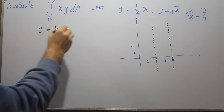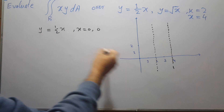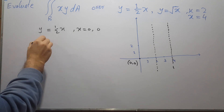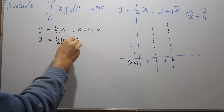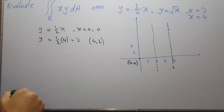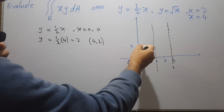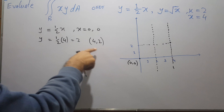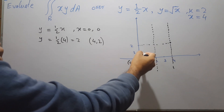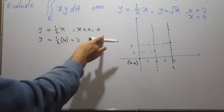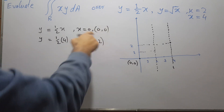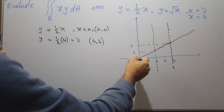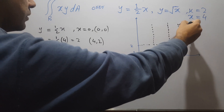To sketch y equals (1/2)x, we can use any two points. If x equals 2, then y equals 1. If x equals 4, then y equals 2. Joining these two points gives us a straight line, and that is y equals (1/2)x.